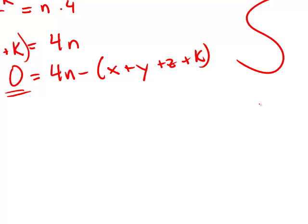Now forget about statement number 1. Statement number 2. Statement number 2 tells us that x, y, z, and k are consecutive integers. Okay, so one right after the other.